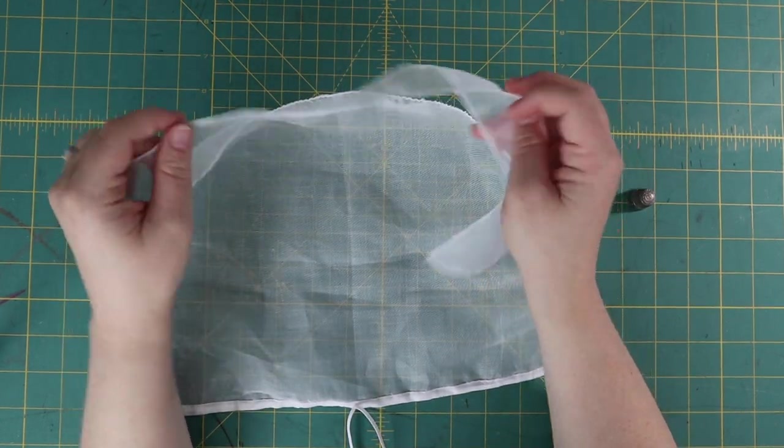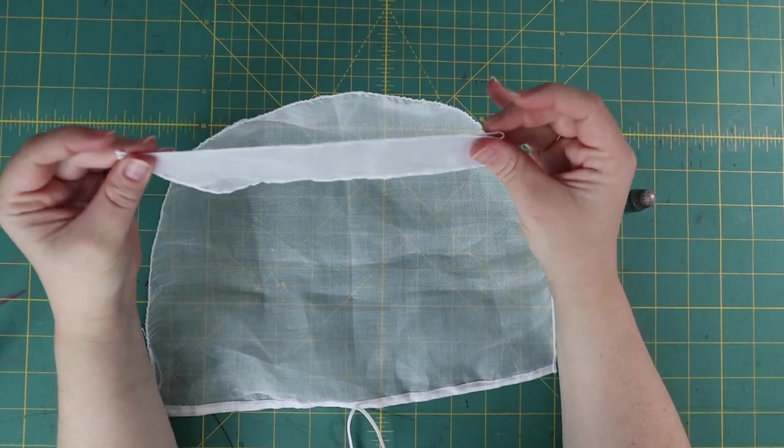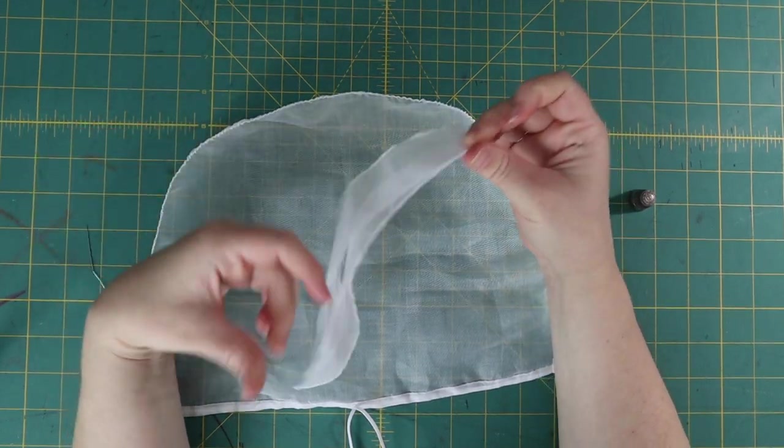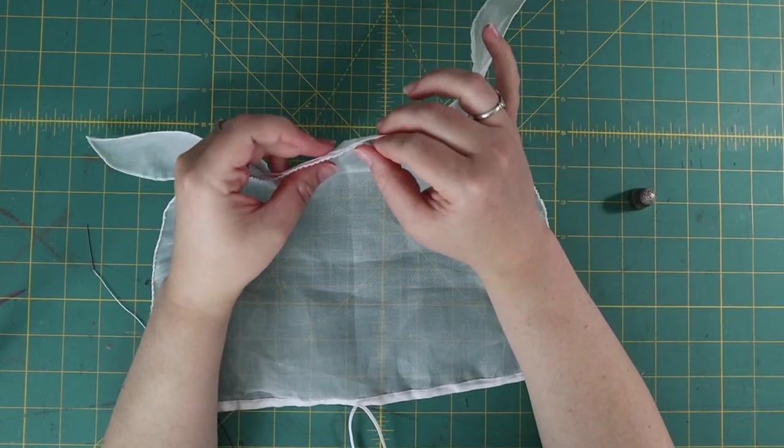I cannot recall who called this the divide and conquer method, but if you do, please let me know in the comments. Essentially, that's exactly what I'm doing. I'm dividing the cull and the band into halves, and matching that point right sides together.